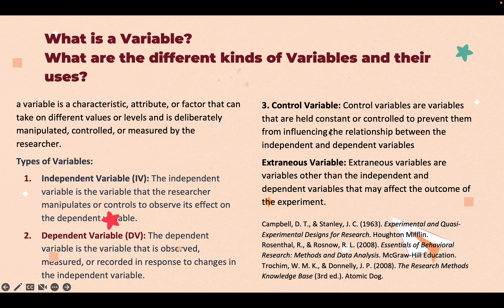Control variables are kept constant or controlled to prevent them from influencing the relationship between independent and dependent variables. For example, in a study about drug efficacy: the independent variable is drug dosage (low, medium, or high dose), the dependent variable is the patient outcome — whether they improve or what side effects occur. The control group receives no medication — no drug is given — that is the control.